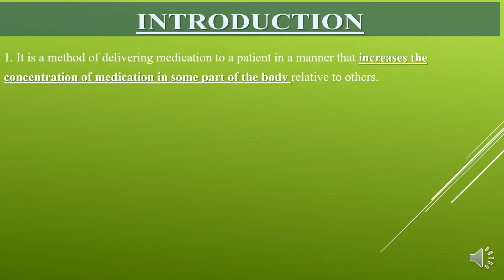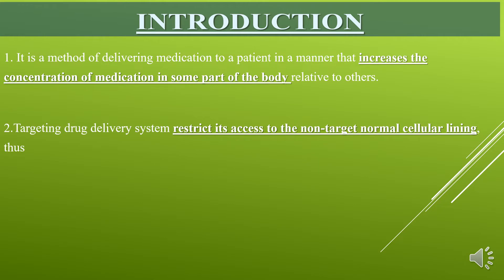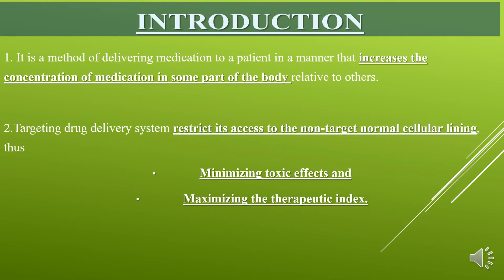First point: It is a method of delivering medication to a patient in a manner that increases the concentration of medication in some part of the body relative to others. Second point: Targeted drug delivery system restricts its access to the non-target normal cellular lining. It means it avoids interaction with healthy tissue so that it minimizes toxic effects and maximizes the therapeutic index of the drug.